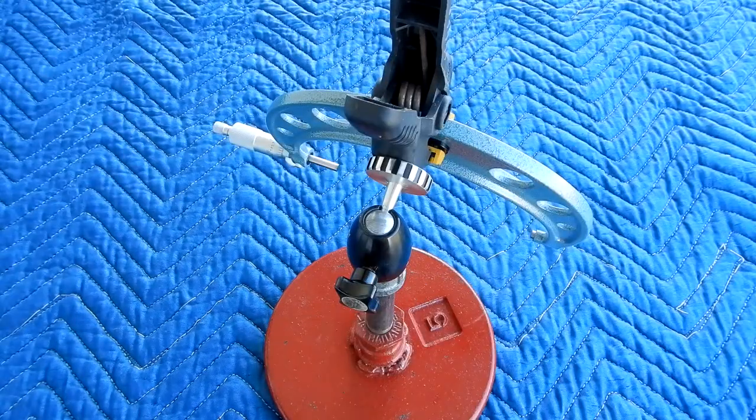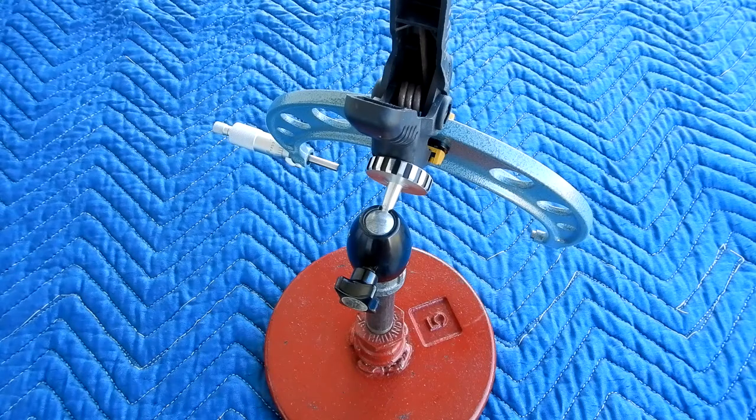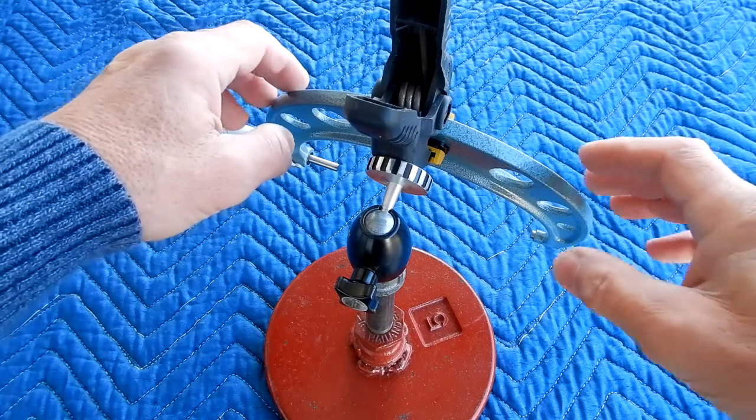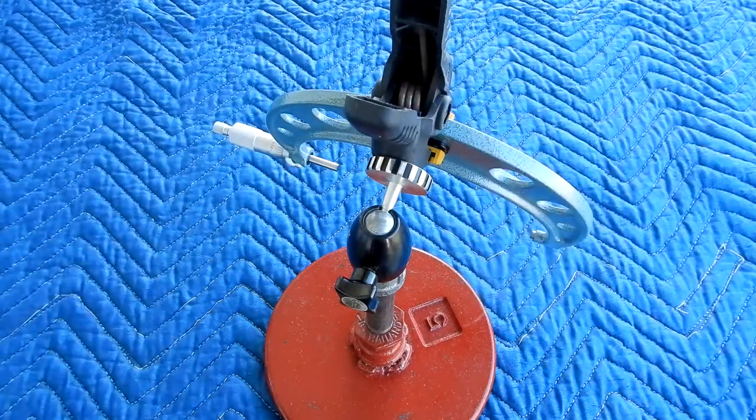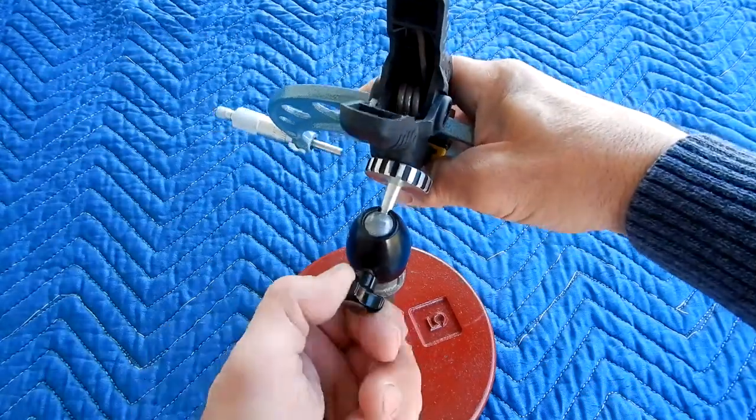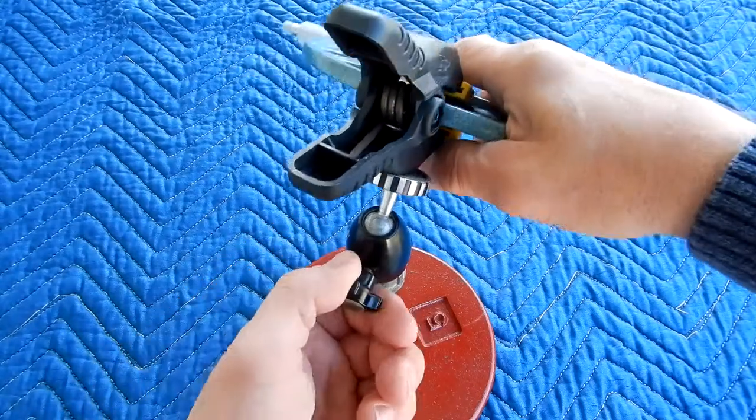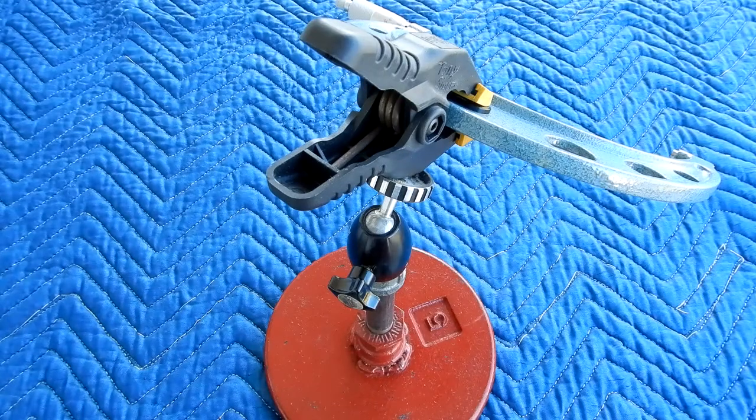To show you how well that holds, I've got these large Mitutoyo 6-to-7-inch micrometers down with all the weight bearing down on this little clamp. And as you can see, you can put this anywhere and there's no problem.